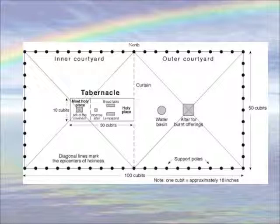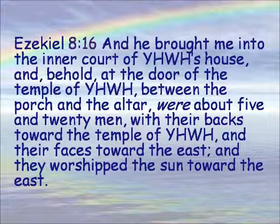The significance of this is shown in Ezekiel: "And he brought me into the inner court of Yahweh's house, and behold, at the door of the temple of Yahweh between the porch and the altar were about 25 men with their backs towards the temple of Yahweh and their faces toward the east." So they are facing the sun, and in that position you cannot see the rainbow. We do sometimes face east because we're facing Jerusalem and waiting for Messiah's return, but the idea here is that we ought not to be worshiping the sun. We need to turn our back on the sun, and then we can see the rainbow.